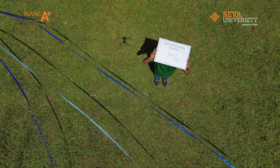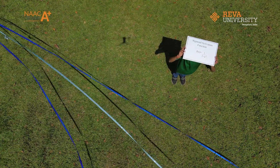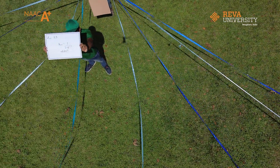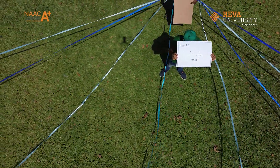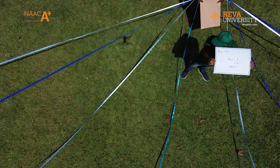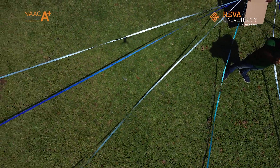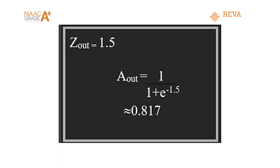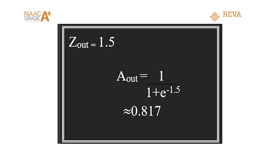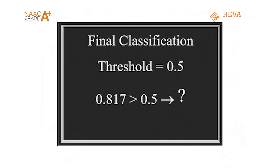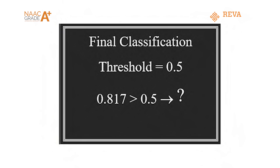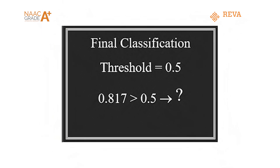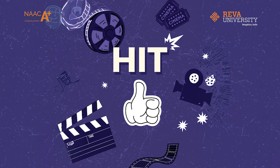Finally, we reach the last step: the output layer. This is where the neural network makes its final prediction. Our calculated Z value is 0.817, which after applying the sigmoid function gives us a probability above the 0.5 threshold. Since 0.817 is greater than 0.5, our model confidently predicts that the movie is a hit.